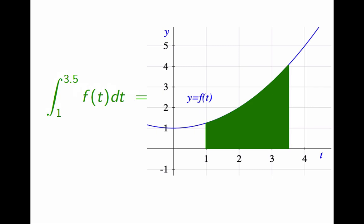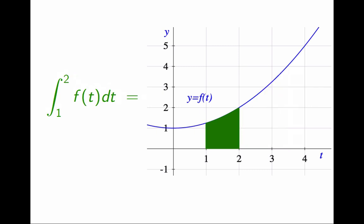What I'm doing here is I'm fixing the first endpoint at 1, but I'm considering different values for the second endpoint. So I'm looking at the second endpoint of the interval of integration as a variable of a new function.